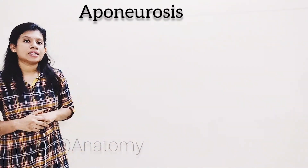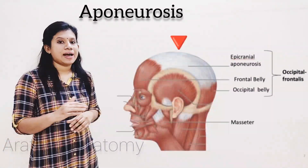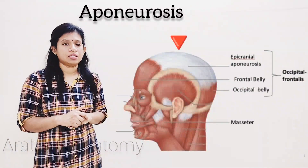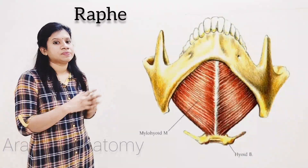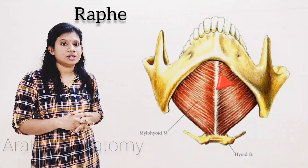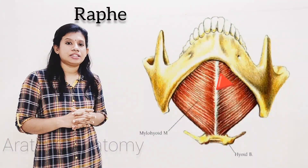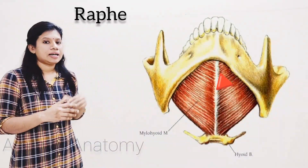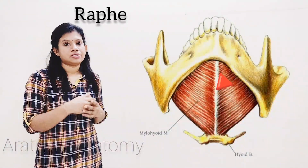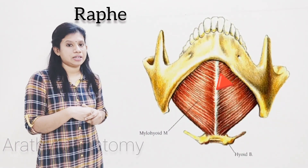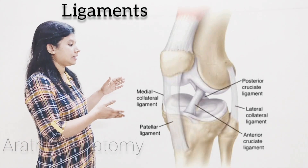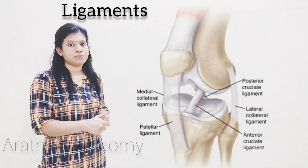Moving on to something called as aponeurosis. Aponeurosis means these are flattened tendons — for example, the epicranial aponeurosis of the scalp. The next one is called as raphae. Raphae means these are fibrous, non-elastic structures especially formed by the two segments of joints.